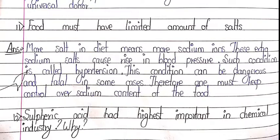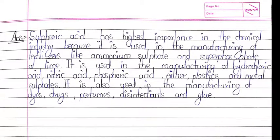Eleventh: you must have a limited amount of salt. More salt in the diet means more sodium ions. These extra sodium salts cause a rise in blood pressure, a condition called hypertension, which can be dangerous and even fatal. Therefore, one must keep control over the sodium content of food. Twelfth: sulfuric acid has the highest importance in the chemical industry. It is used in the manufacture of fertilizers like ammonium sulfate and superphosphates. It is used in manufacturing hydrochloric acid, nitric acid, and phosphoric acid. It is also used in manufacturing plastics, metal sulfates, dyes, drugs, perfumes, disinfectants, and glue.